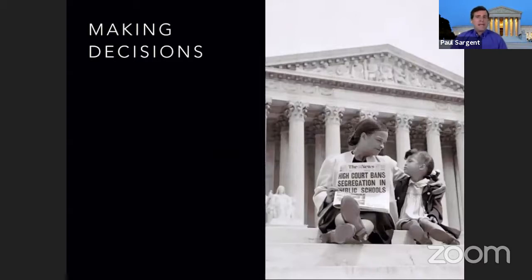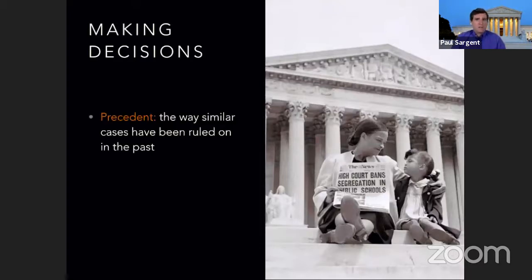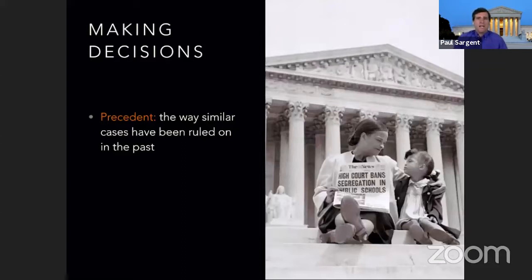How do courts go about making their decisions? Courts across the land make decisions based on a certain set of principles. First is precedent — courts will decide along the lines of how similar cases have been ruled on in the past. If you go to law school, you'll spend a lot of time learning about precedent. You'll look back and say, here's a case similar to this one ruled this way — and the other side will look for cases ruled differently. Every case has special circumstances, but you rely on precedent — what came before.